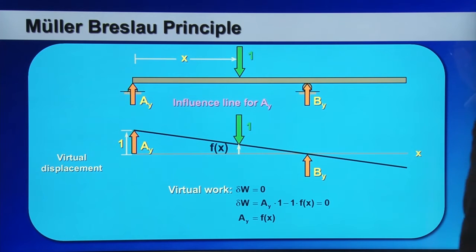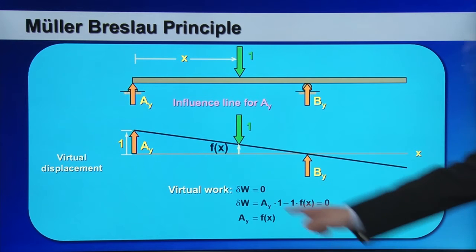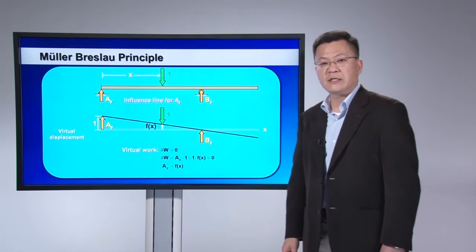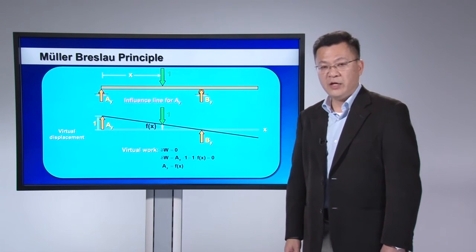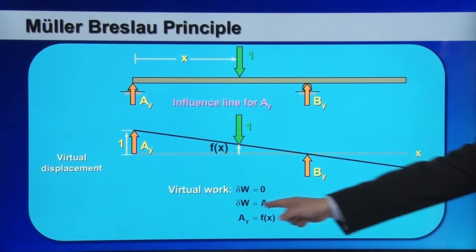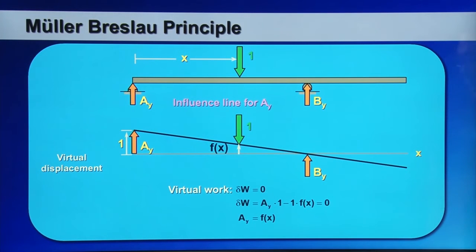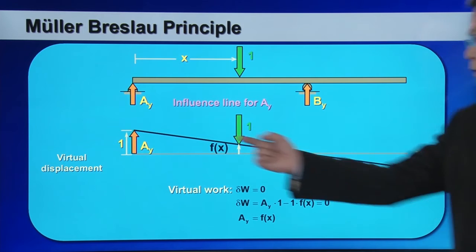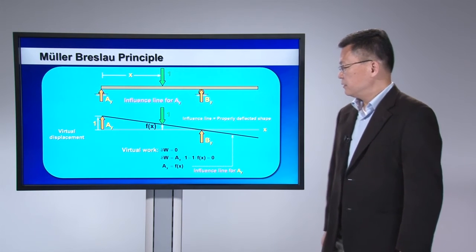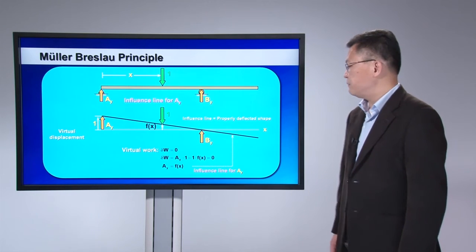Because point B is held stationary, By does not contribute to any virtual work. So the virtual work is: delta W = Ay times 1 minus 1 times Fx. Since virtual work for a rigid body under equilibrium equals zero, setting delta W to zero gives Ay = Fx, which is the profile of the deflected shape. This echoes the principle that the influence line equals a properly deflected shape of the structure.